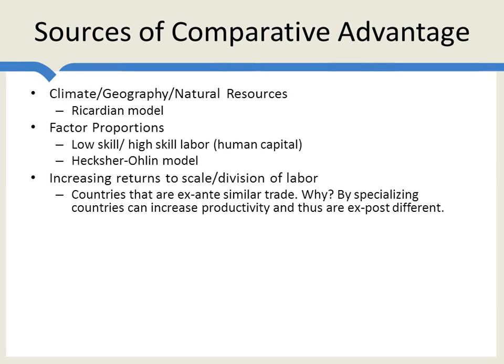Developed countries, in general, trade most with other developed countries. The theory of comparative advantage says that's a little bit odd, because you want to trade with countries that are different than you, not countries that are the same. So how does increasing returns explain the fact that similar countries trade a lot? Well, by specializing, countries can increase their productivity. They become ex-post different. After they specialize, they become different, and then they can trade based upon those increases in productivity.